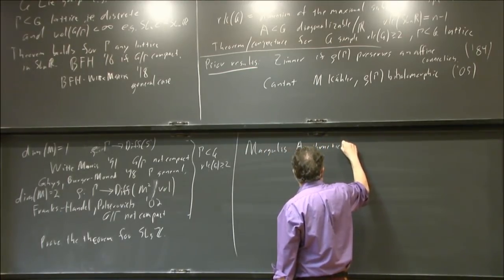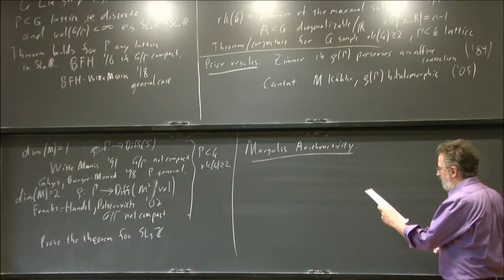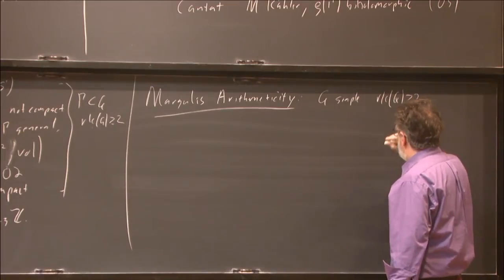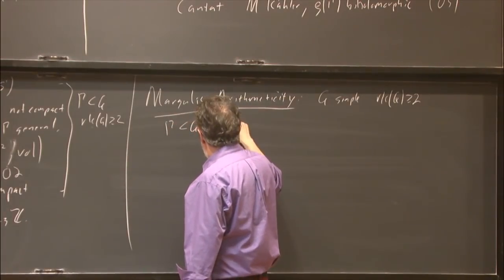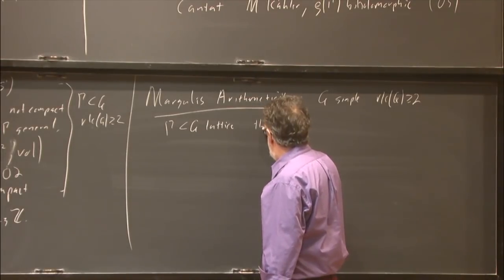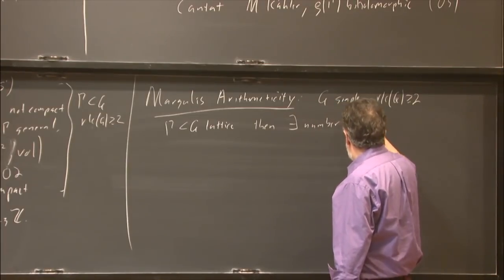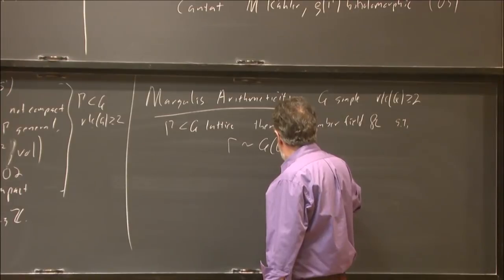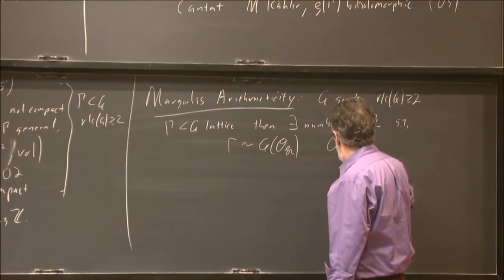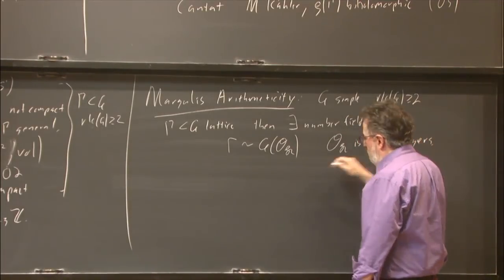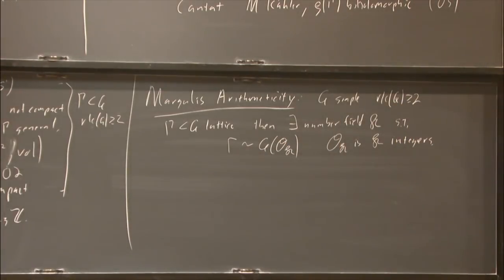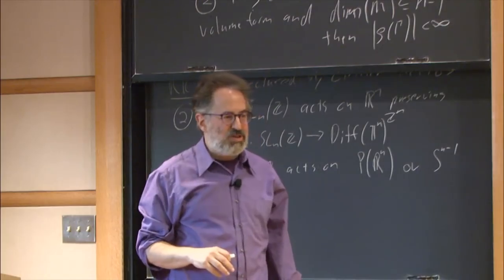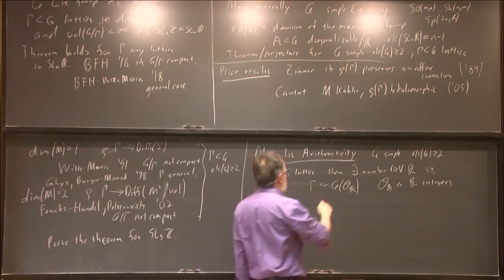Margulis' arithmeticity theorem is the first I'll tell you. If G is a simple Lie group with rank G greater than or equal to 2, and Gamma in G is a lattice, then Margulis proves more or less that there exists a number field K such that Gamma is, roughly speaking, the O(K) points—where O(K) is the K-integers. It really says the only way to get lattices in these groups is by some variant of just taking integer points. This is from around 1974.